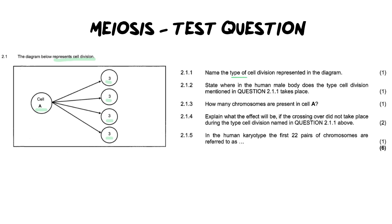So the first question says name the type of cell division represented in the diagram. Well the clue for us to answer that is because we have four cells at the end of the cellular division and the only cellular division that produces four cells at the end is going to be meiosis. Mitosis on the other hand produces only two.